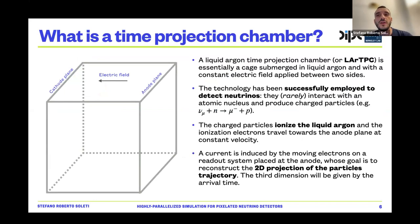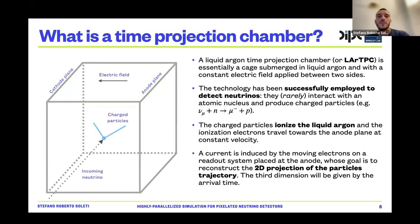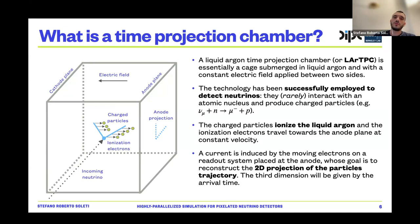The main technology we use to detect neutrinos in DUNE is called the Liquid Argon Time Projection Chamber, or LArTPC. The LArTPC is essentially a cage submerged in liquid argon with a constant electric field applied between the two sides. This technology has been successfully employed to detect neutrinos at Fermilab. Neutrinos rarely interact with the atomic nucleus, but when they do they produce charged particles — for example, a muon when the neutrino interacts with a neutron. These charged particles ionize the liquid argon, and ionization electrons travel towards the anode plane at constant velocity due to the electric field. The goal is to reconstruct the trajectory of the charged particles in the detector.